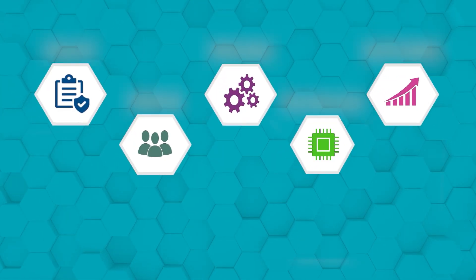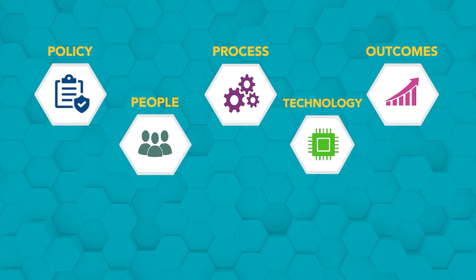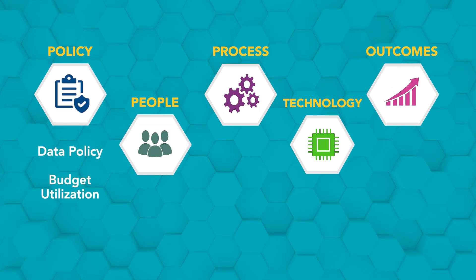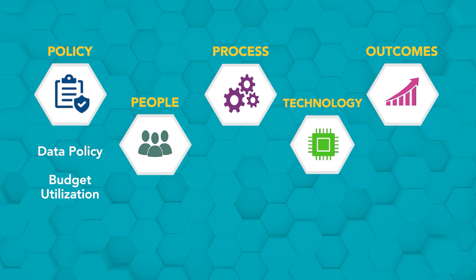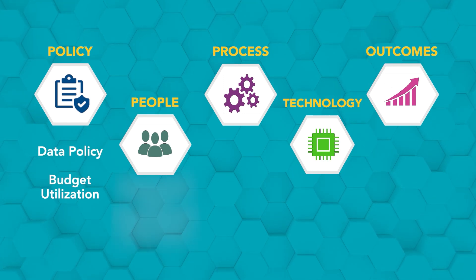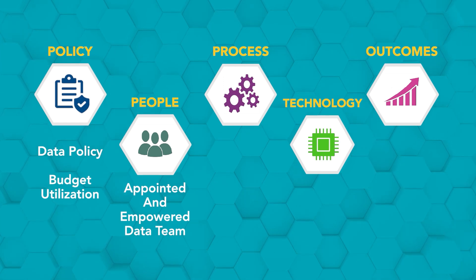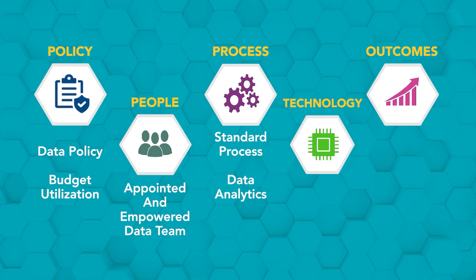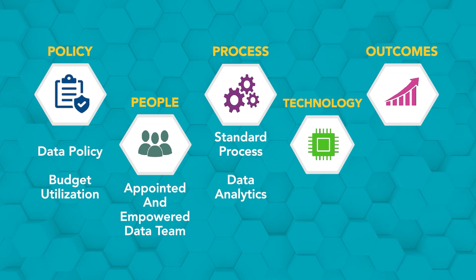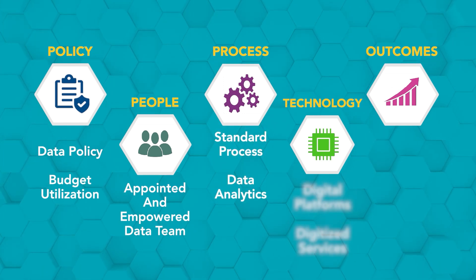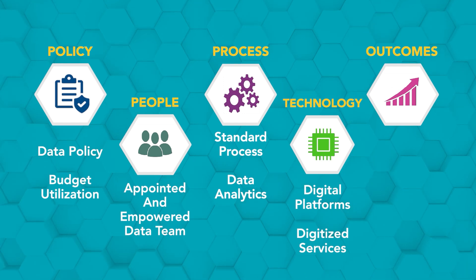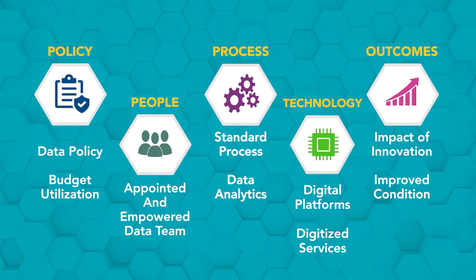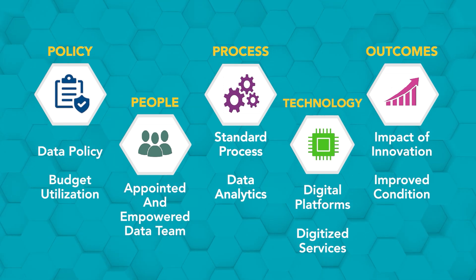Here are the key points for systemic maturity assessment. Under the policy component, the important elements are data policy and budget utilization. For the people component, it is whether there is an appointed and empowered data team. For process assessment, there must be a standardized process for data governance and data analytics must be institutionalized in the LGU. For technology, it's about having digital platforms and digitized services for citizens. Finally, the assessment of quality of impact or outcomes — whether innovations result in improved living conditions for citizens.